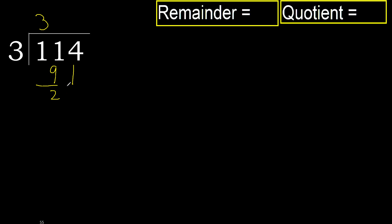Next: bring down 4 to get 24. 3 multiplied by 9 is 27 — 27 is greater. 3 multiplied by 8 is 24 — 24 is not greater. Subtract: remainder is 0.